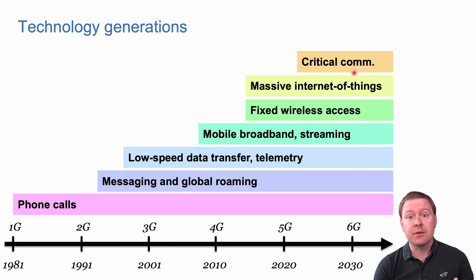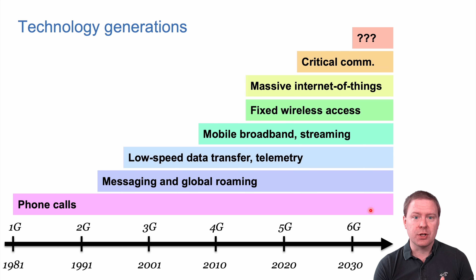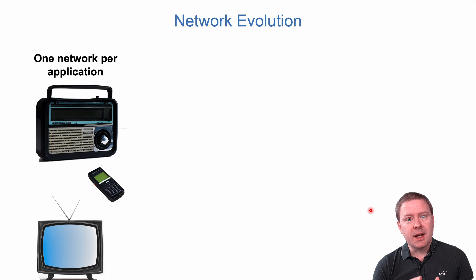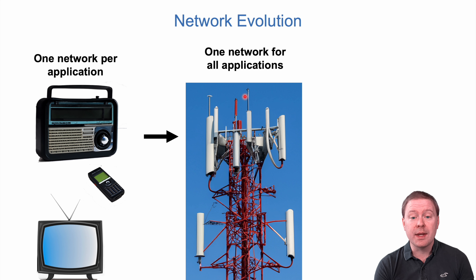Different kinds of things like self-driving vehicles could potentially be implemented because we can deliver messages with higher reliability, low latency, and guarantee that. Of course, something else will be added in the future — for example, 6G technology will support new applications we haven't really imagined yet. A general trend in network evolution is that we started with one network per application, but now all of these services can be done within one network connecting to the internet over wireless technology.